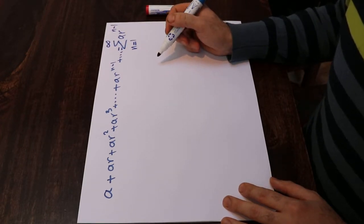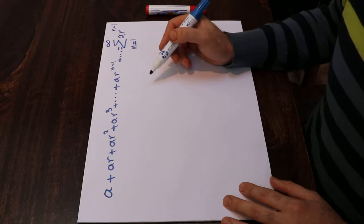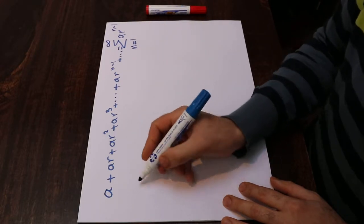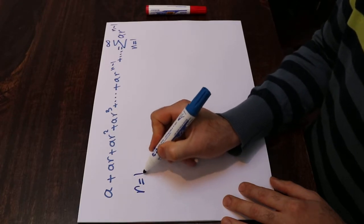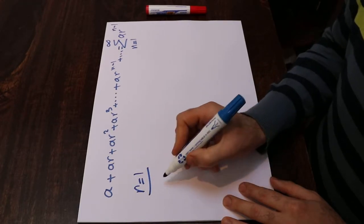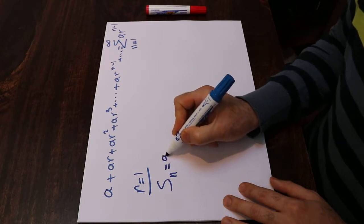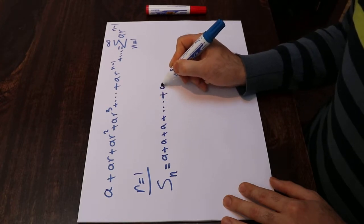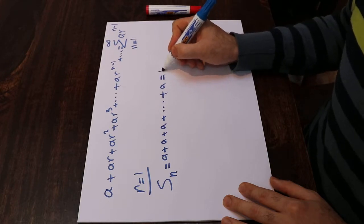We want to evaluate whether this series is divergent or convergent. Let's consider first the case when R is equal to 1. If R is equal to 1, SN, the summation, will be equal to A plus A plus A plus A, because all terms equal A when R equals 1, and that will be equal to NA.